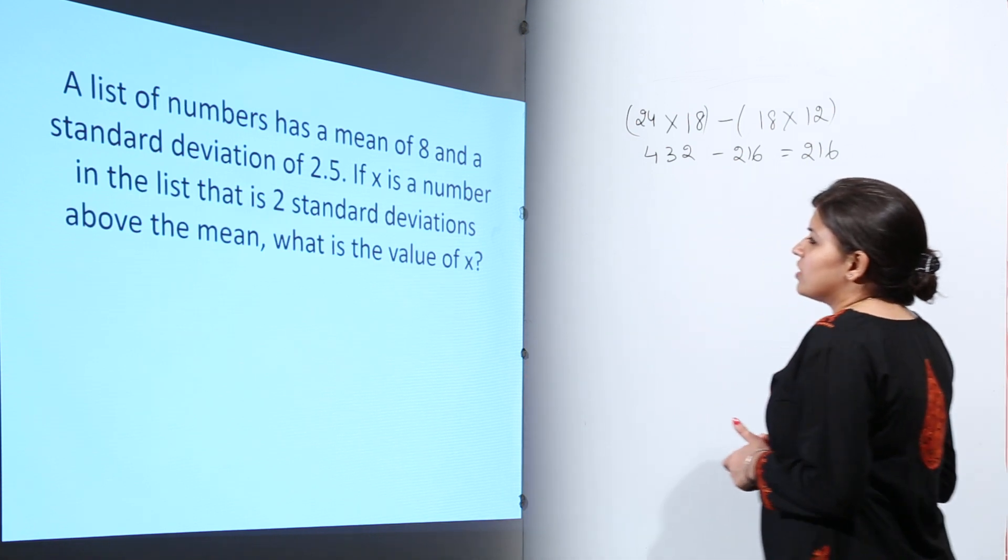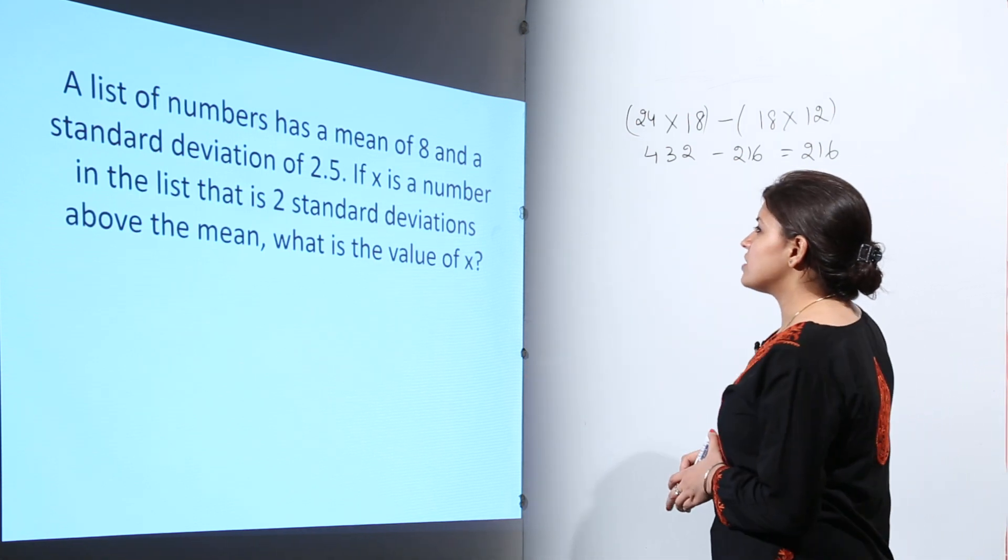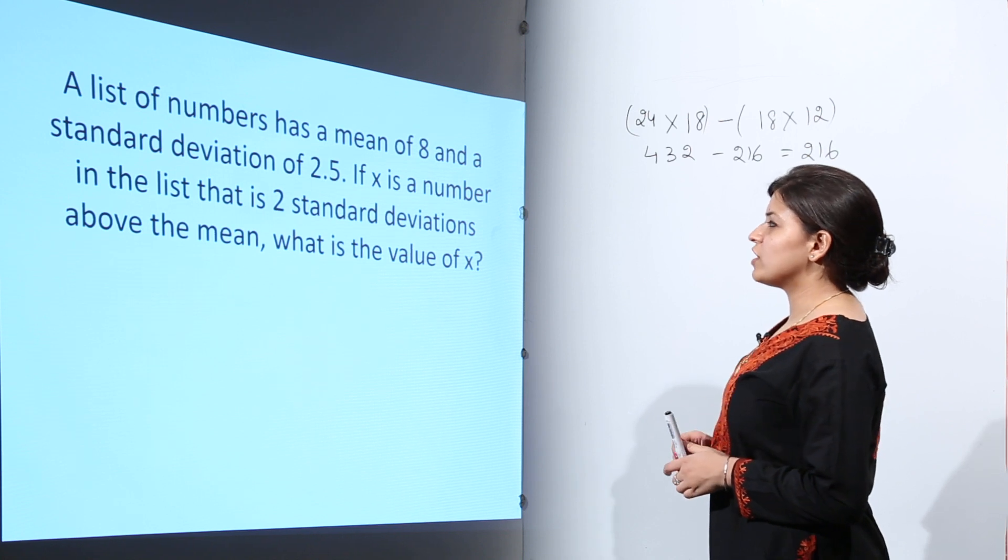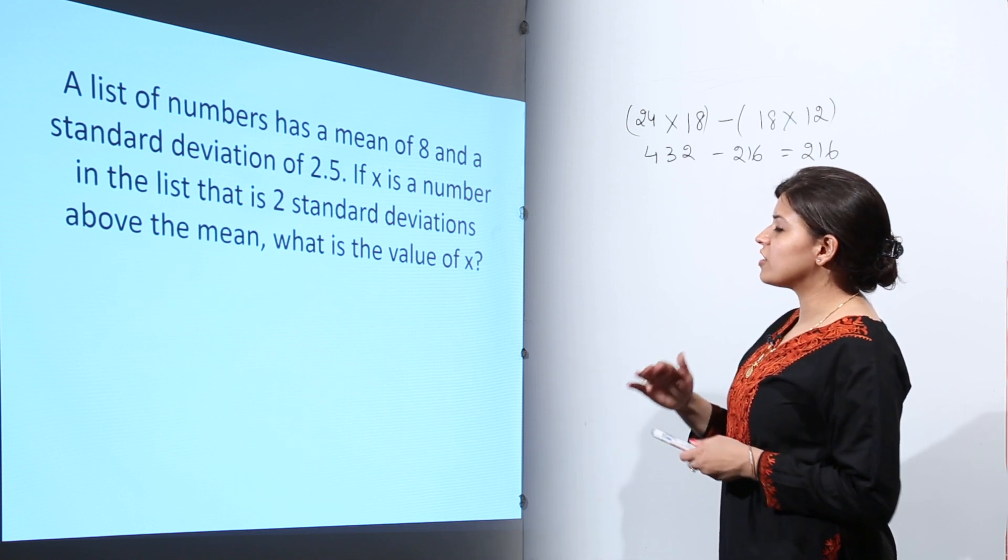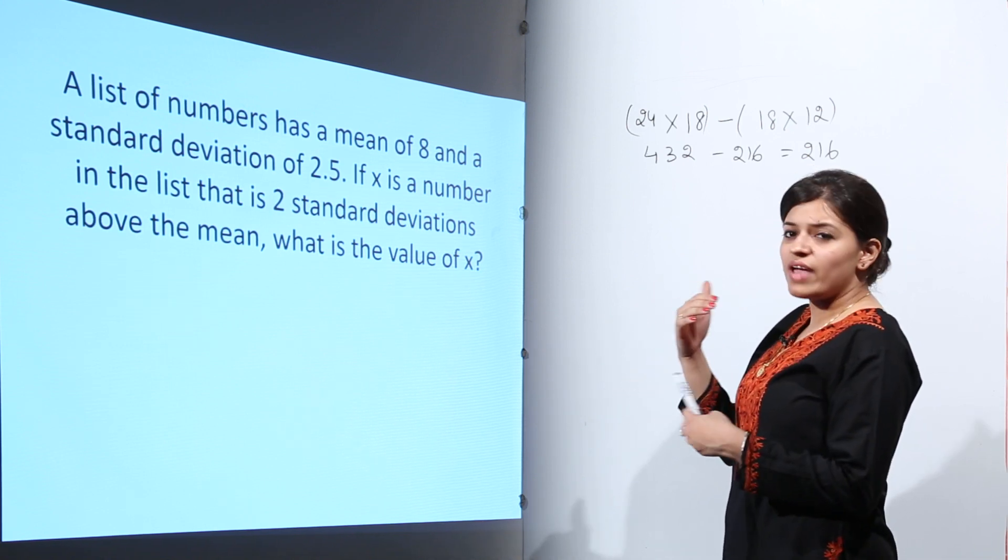The second question says that a list of numbers has a mean of 8 and a standard deviation of 2.5. If x is a number in the list that is two standard deviations above the mean, what is the value of x?